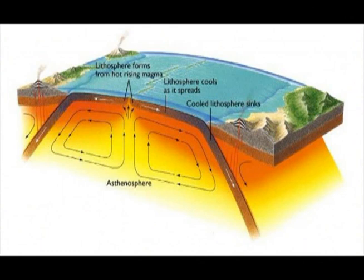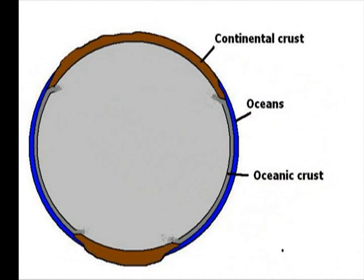Thicker crustal plates, made mostly of granite, make up our continents. The oceans mostly fill the lower and thinner crustal plates, made of basalt.